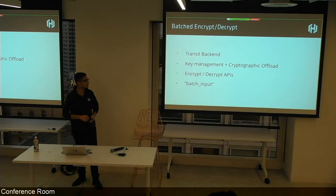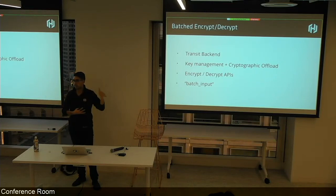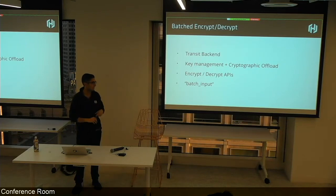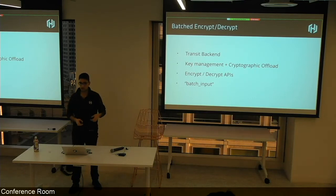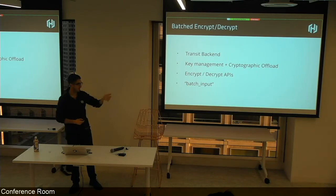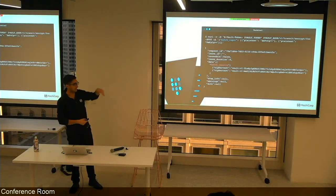Batch encrypt/decrypt was also added. When rendering a web page requires decrypting five to ten pieces of user data from a normalized database, you'd rather send all of that to Vault in one request than do ten round trips. This extends all existing transit endpoints to accept a batch — instead of one plaintext in, you pass a list of plaintexts and get a list of ciphertexts back.